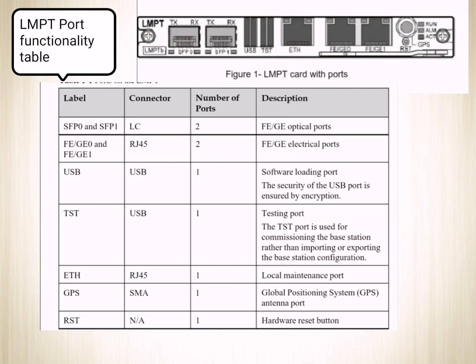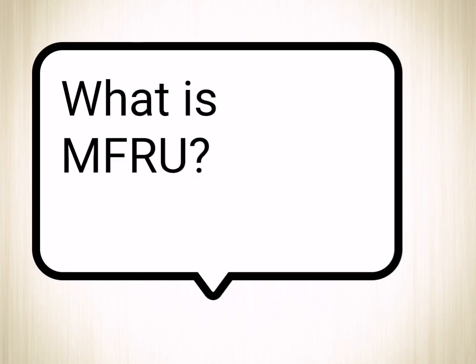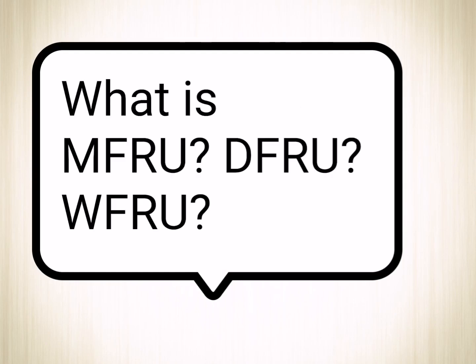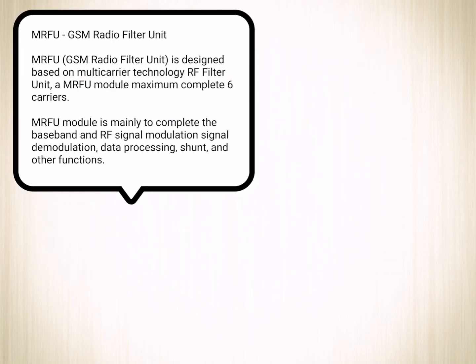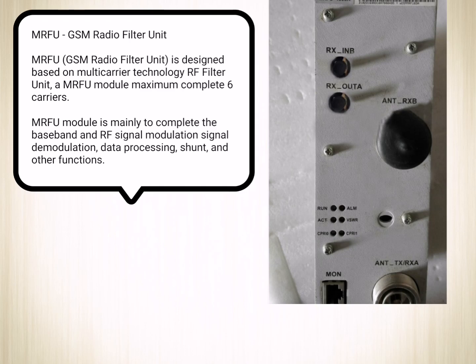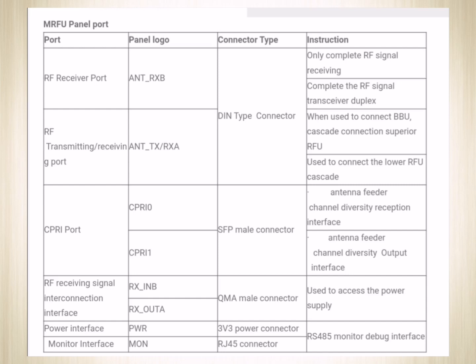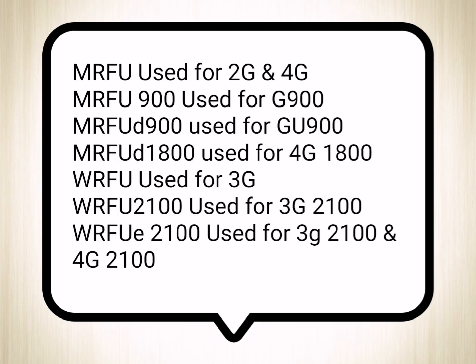You can read the LMPT functionality table for more details. Next question: what is MFRU? MFRU is a multi-carrier technology RF filter. It can accommodate a maximum of six carriers. It has panel ports for RF receiver, transmitting, and fiber optics, and it is used for 2G and 4G. Interview questions may cover MFRU versions and its use across 2G, 3G, and 4G technologies.